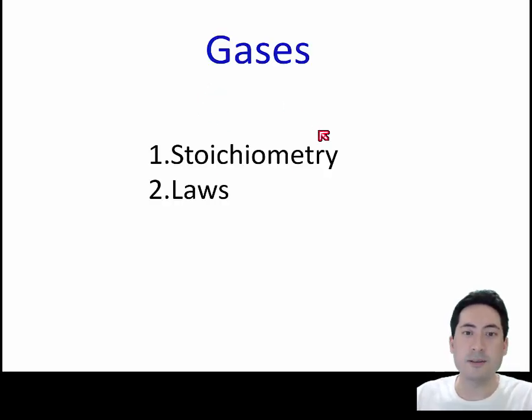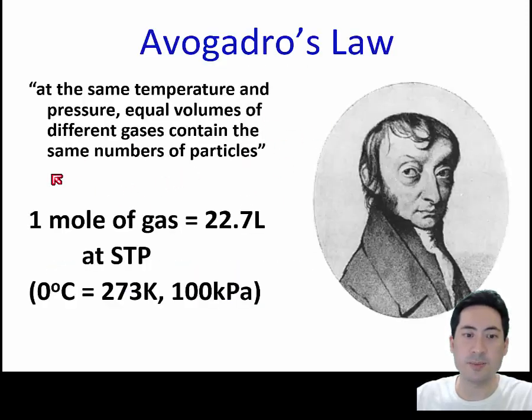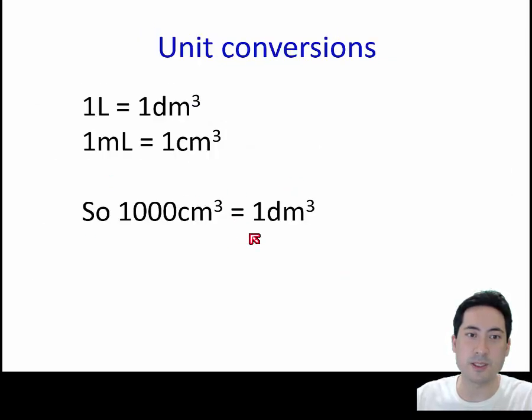Moving on to gases now, there is the stoichiometry ratio and then we have the gas law. Let's do the stoichiometry first. In IB they've used these as the reference values—standard temperature and pressure values. 100 kilopascals. It's good to know that one atmosphere is 101,300 pascals. You need to know that. At the same temperature and pressure, equal volumes of gases contain the same number of particles.